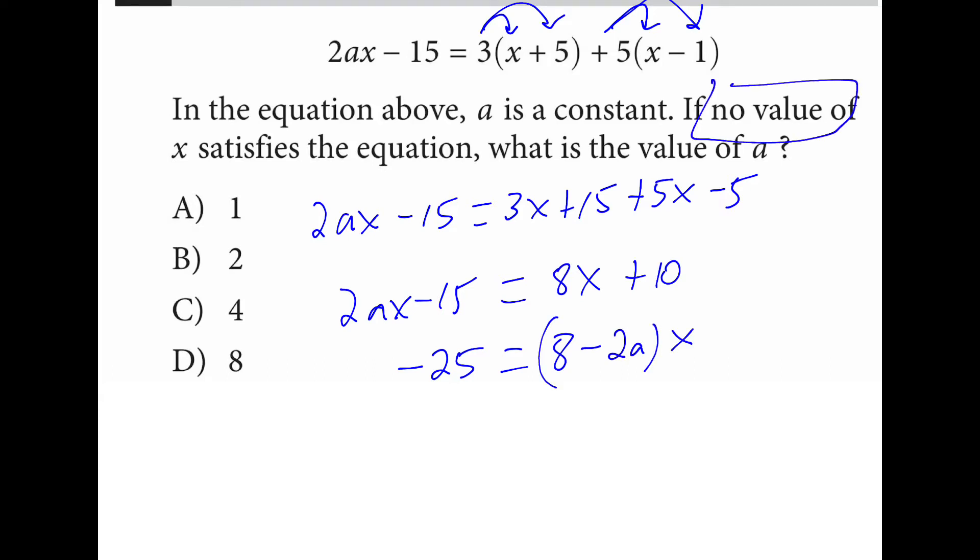At this point they're telling me that there's no value to satisfy. So I'm looking for an untrue statement. So when will this equal to zero? If I can figure that out, then I know that this will never be true. So eight minus two times what gives me zero? Eight minus two times four.